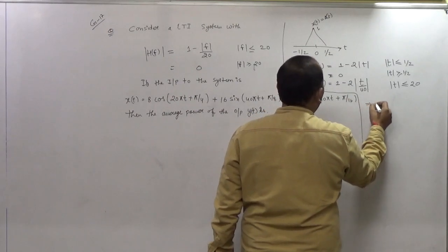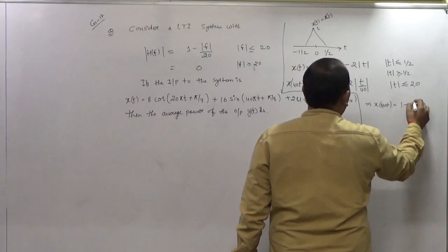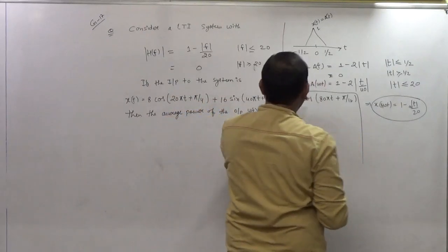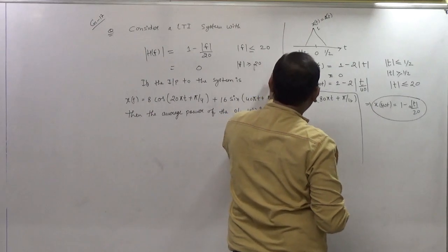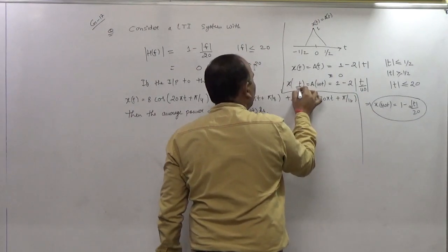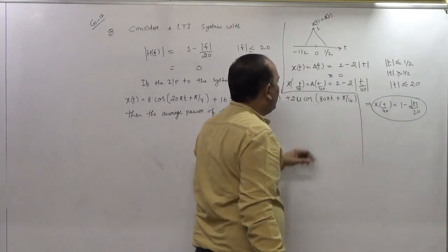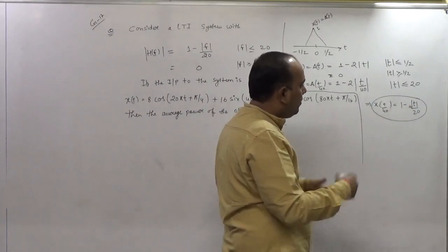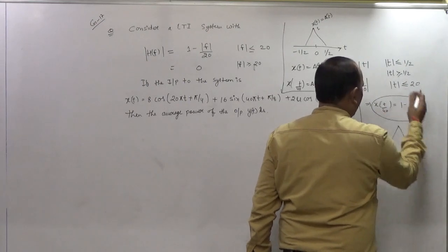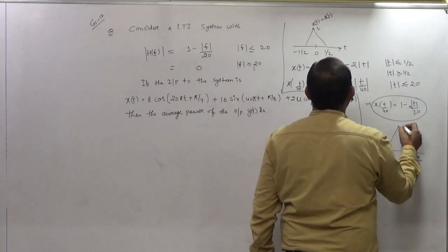Overall, we can say that X(40T) — that is, the triangle of 40T — equals 1 - |T/20|. This is similar to the original triangular function, but when we replace T with T/40 and divide by 40, it becomes a compressed or expanded form.